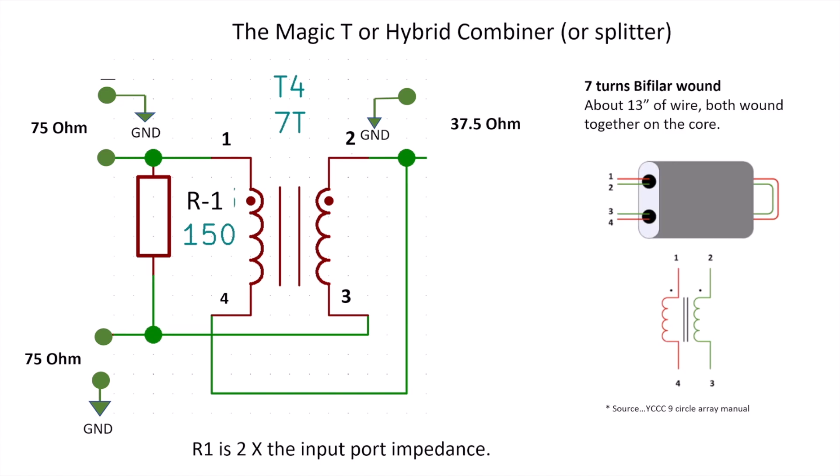The transformer is a bifilar wound binocular core made with seven turns of two colors of wire, about 13 inches through an Amidon 2873000202 core. Perhaps at the bottom of the video I'll include a link to a DigiKey part number. These are the same cores that I use in all of my low band systems for verticals or beverage impedance matching. The resistor value R1 is always going to be two times the input impedance of the input ports. In this case with a 75 ohm design, the resistor is 150 ohms.